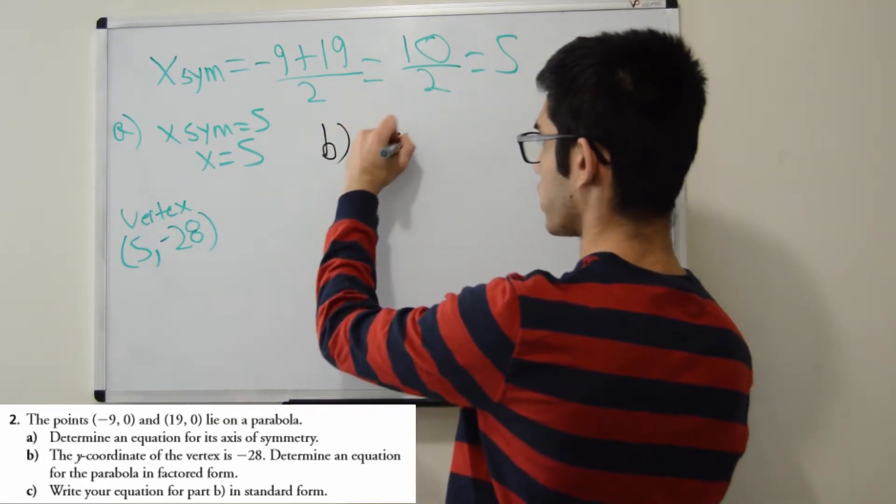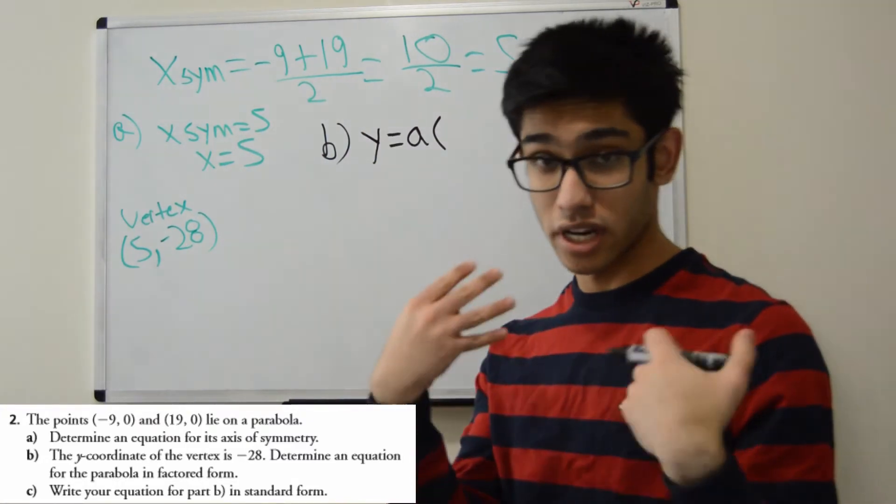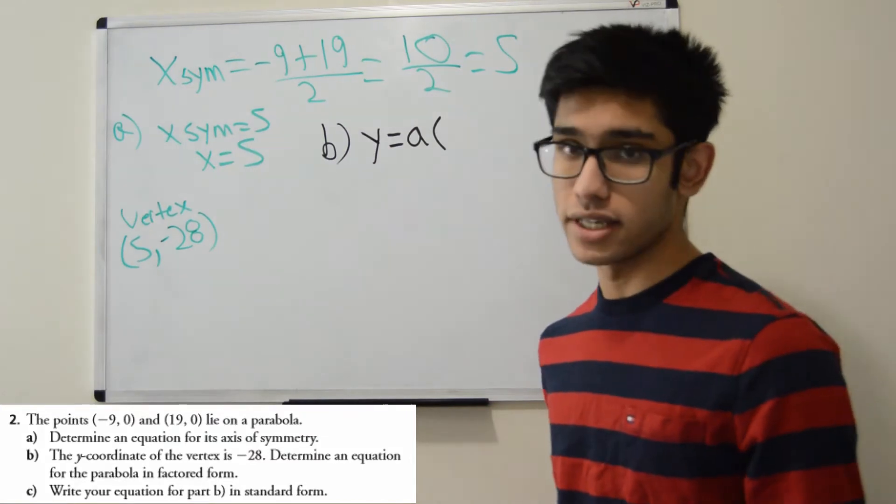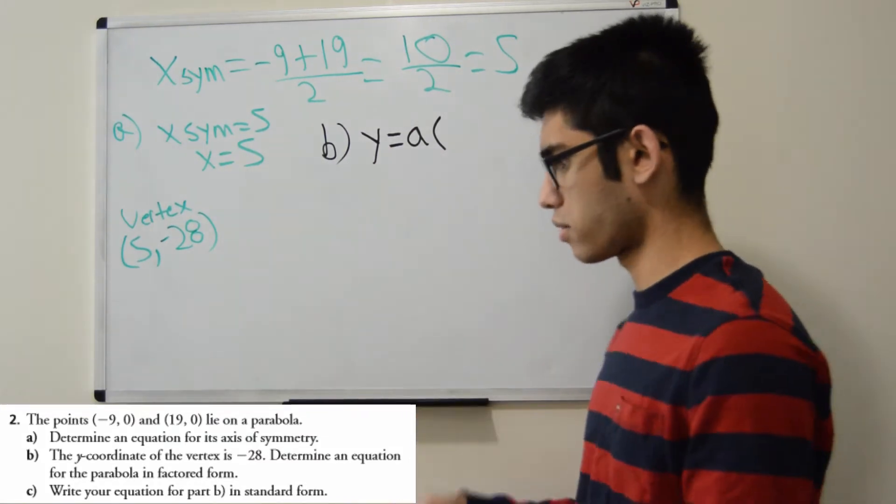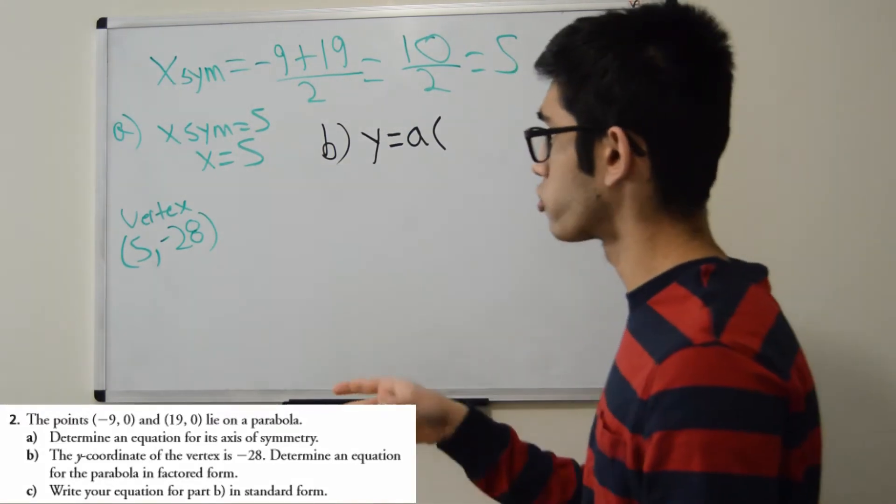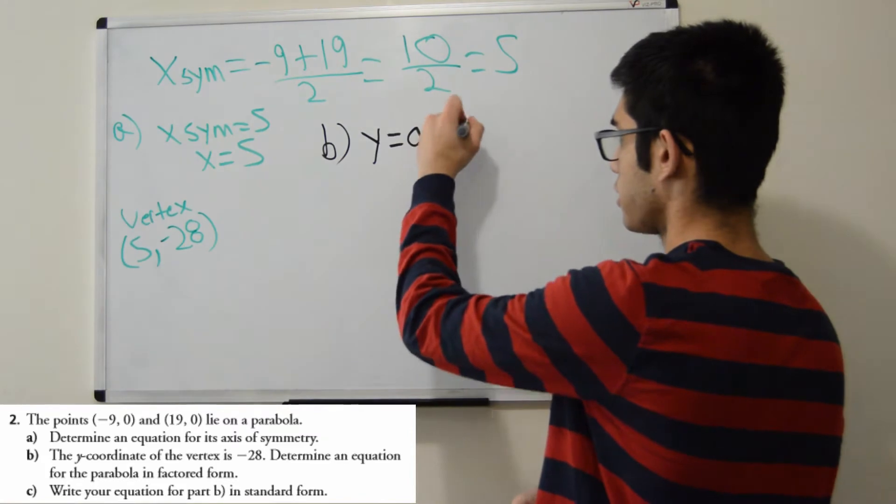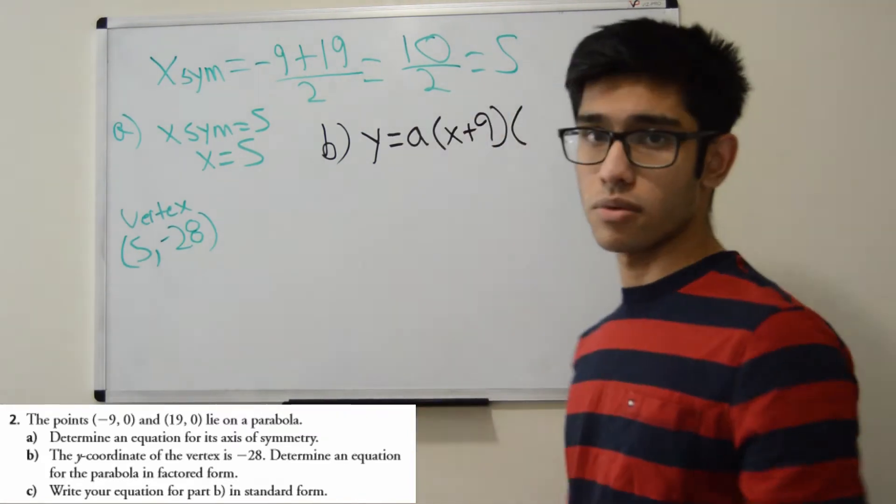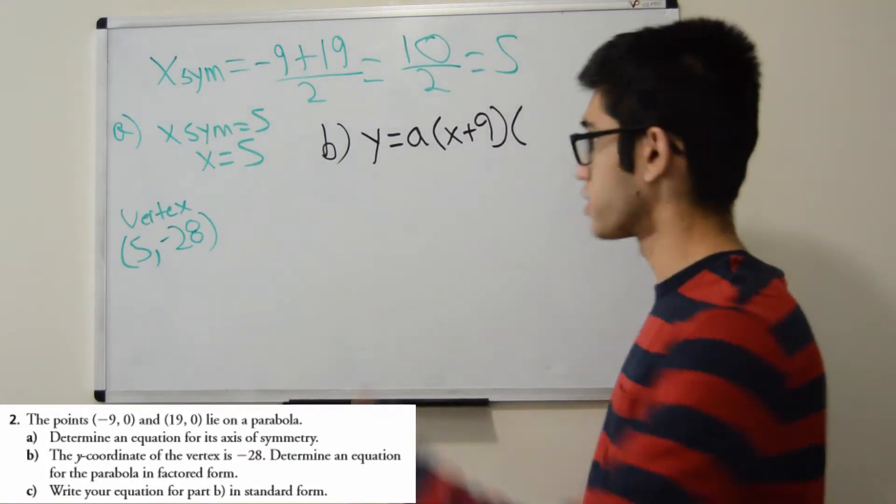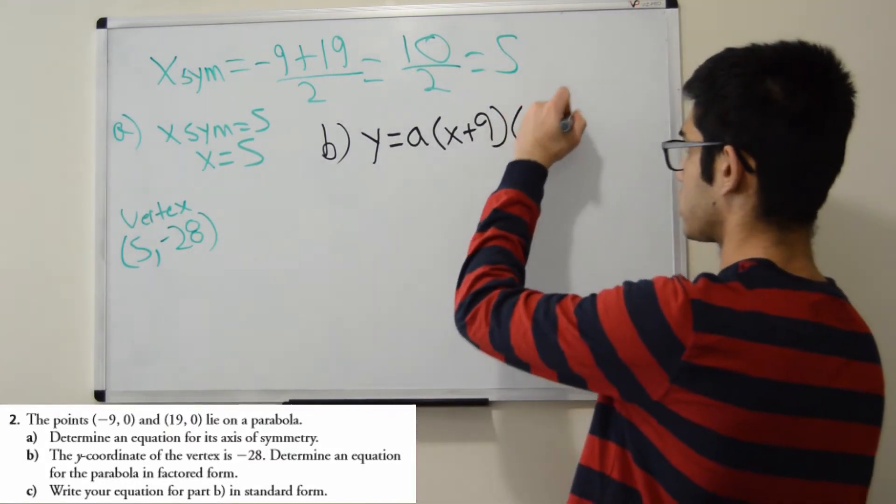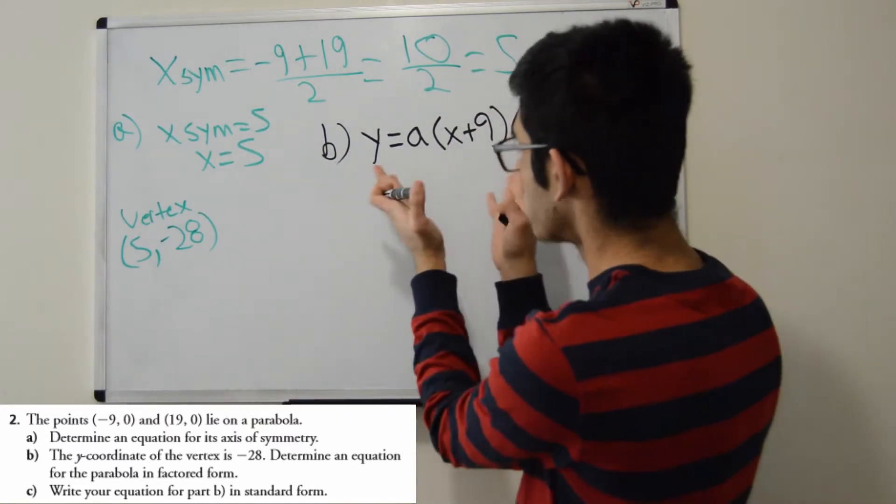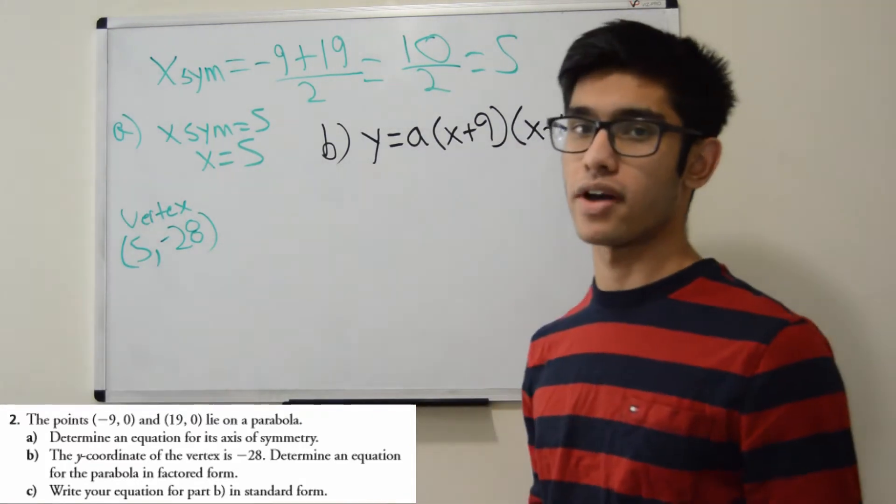So factored form for this equation. So y equals, we don't know our a value yet. We do know our zeros. So our zeros are (-9, 0) and (19, 0). So if our zero is -9, well, in my factors I write the opposite, so it'll be x + 9. And what's my other zero? Well, that's 19. So in my brackets, I'll write the opposite. So it'll be x - 19. So now that we have our general equation in factored form, well, we don't have the a value yet.